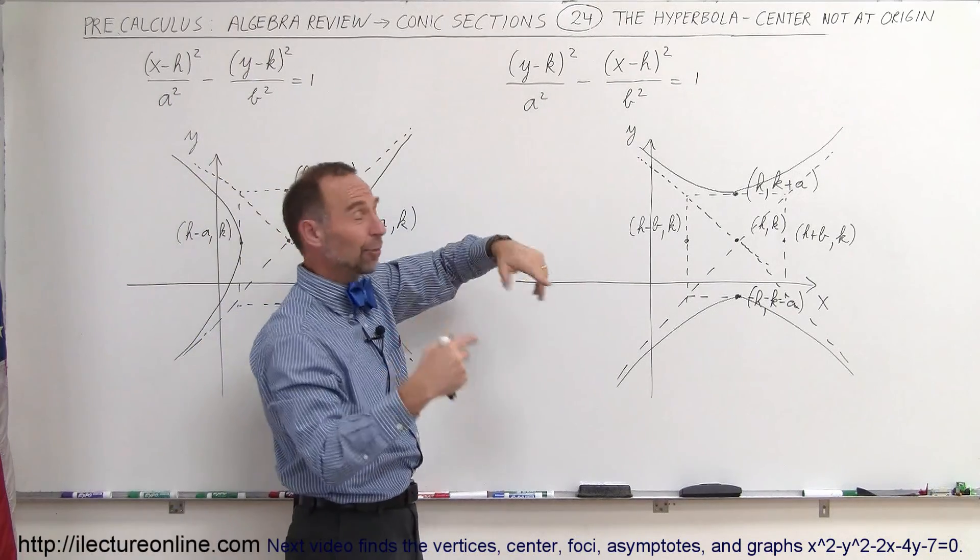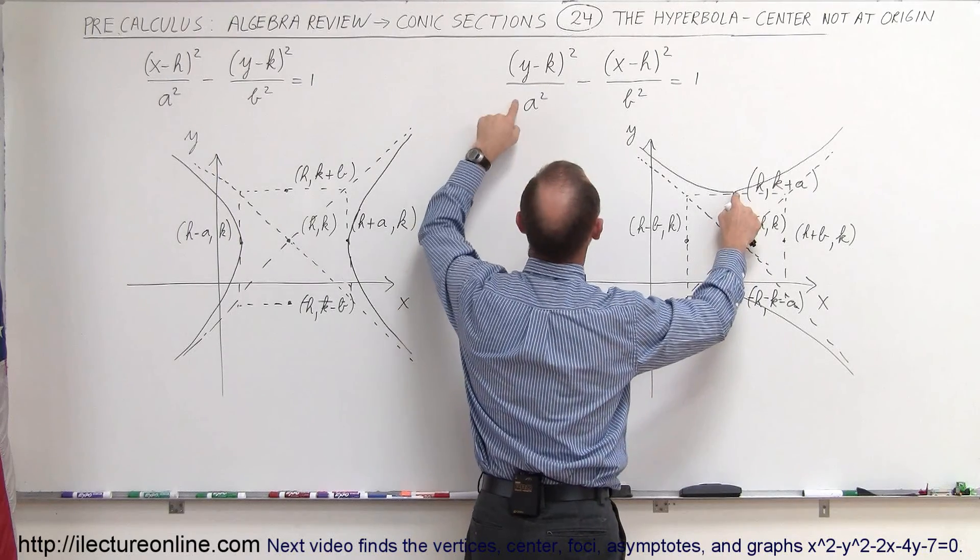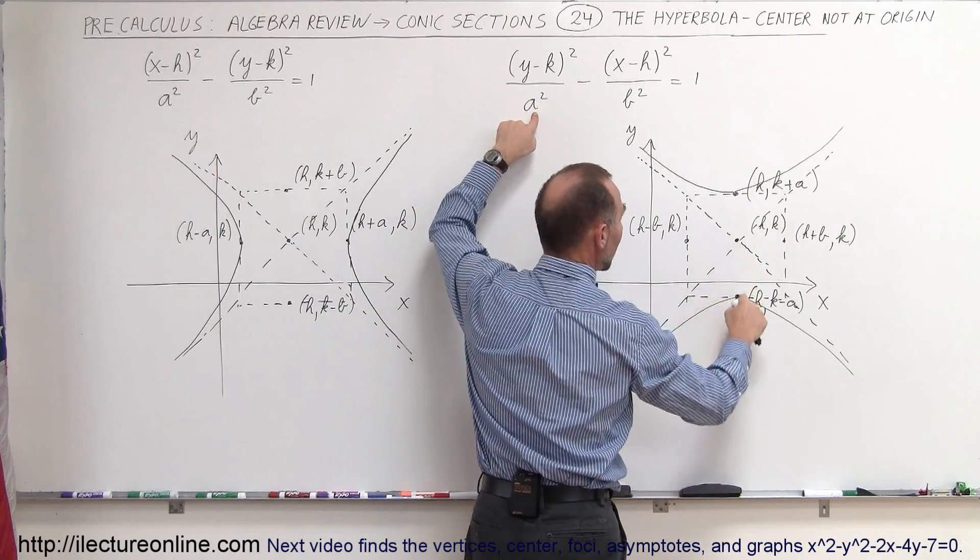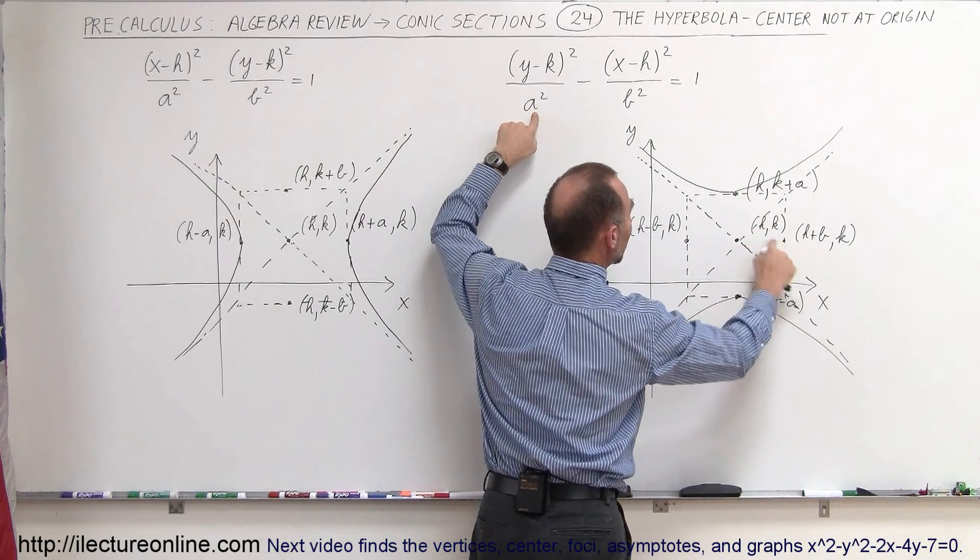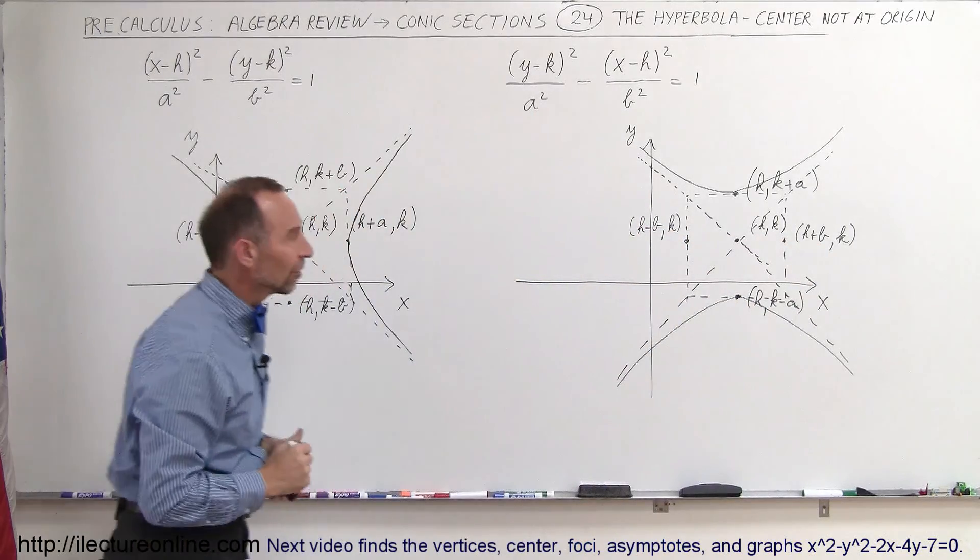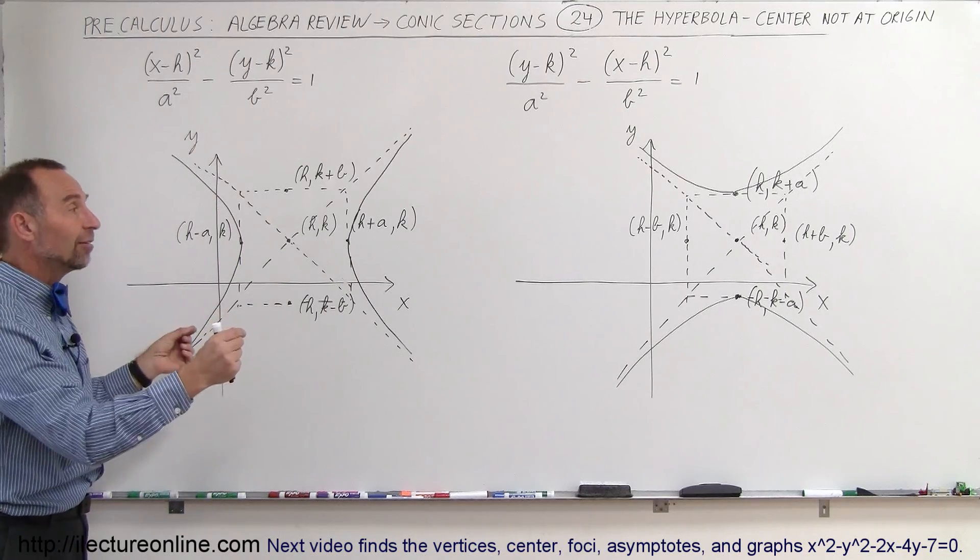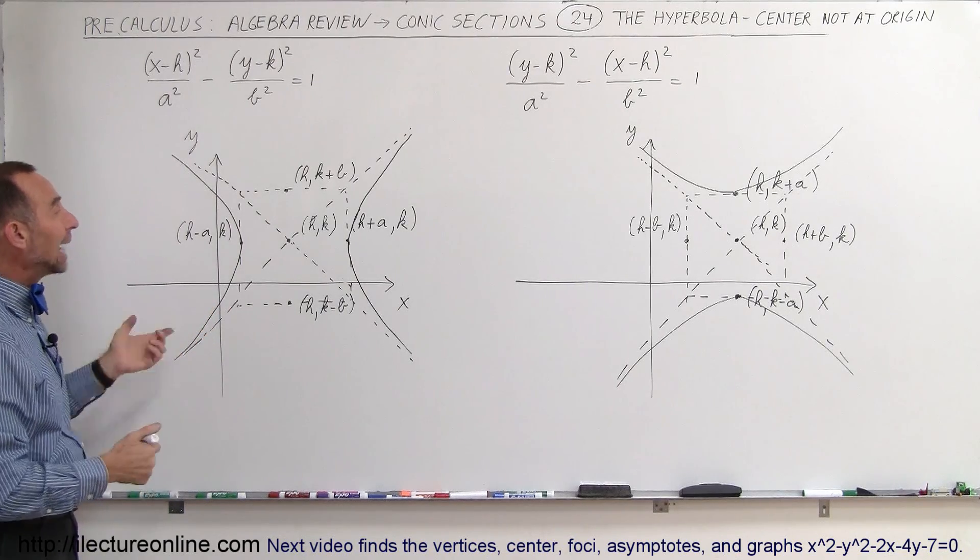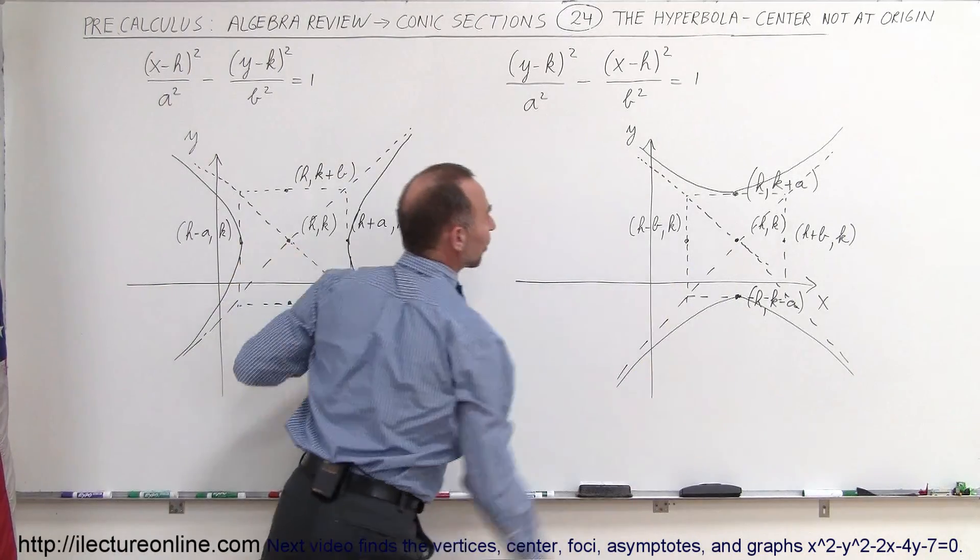Over here, things are reversed, so we take the center here, and it will be h and k plus a, and h and k minus a. And then of course in the horizontal direction, it will be h plus b and h minus b, where k stays the same, because that's the y value that does not change. And that's how we deal with hyperbolas that have been offset from the center by the amount h and k, and h,k is indicated to be the center of the hyperbola.